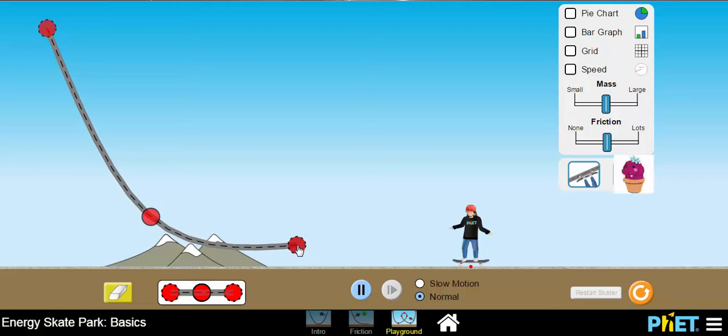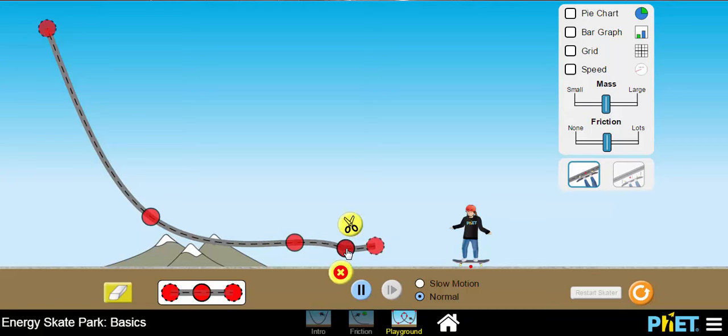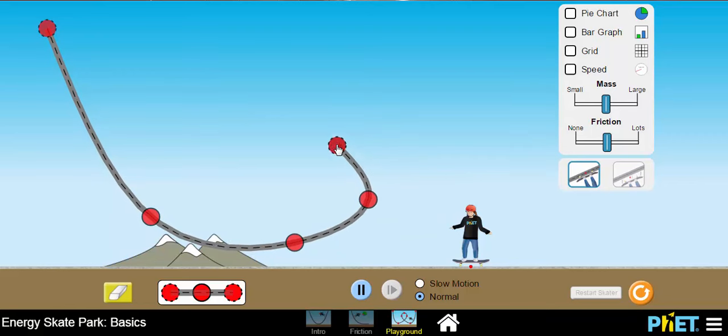But that's not really what I want. What I actually want to do is to drag more track into the picture here. So simply when you drag one piece of track onto another, you can see that it just connects automatically, which is kind of nice. So I'm going to keep stretching my track out.